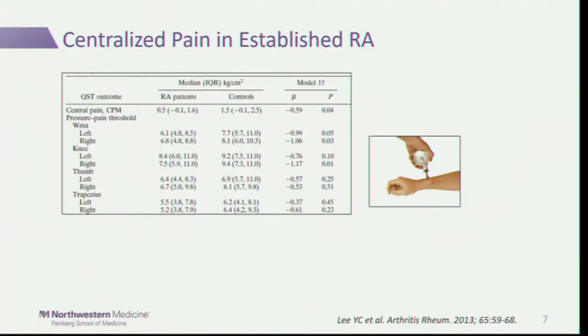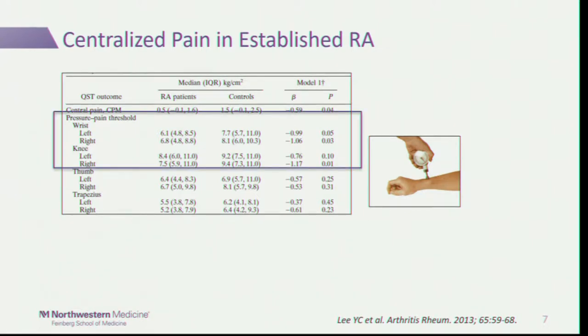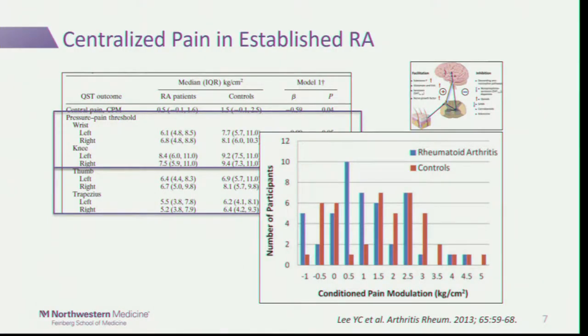We then looked at centralized pain in established RA patients with an average disease duration of nine to ten years, using pressure pain threshold testing—a dollarimeter with a rubber tip placed against the patient's skin. You push and ask the patient to say when they first feel pain; lower pain thresholds equal higher pain sensitivity. At joint sites commonly affected by RA such as the wrist and knee, pain thresholds were lower in RA patients than controls, indicating peripheral sensitization. At non-joint sites like the thumbnail and trapezius, thresholds were also lower, suggesting a component of a centralized process.